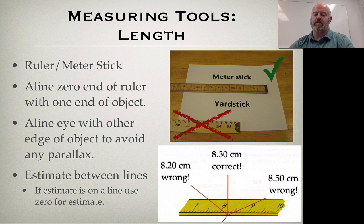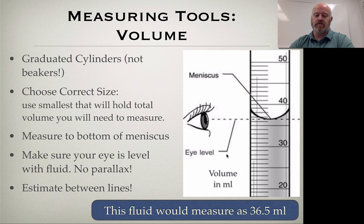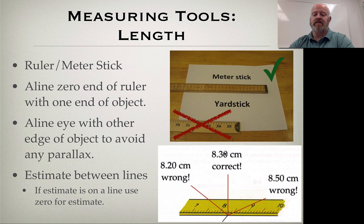Make sure you're estimating between the lines. So on this measurement, we notice how this line, I believe it hit exactly at 8.3. I think it hits right on that line. So my estimate here is 8.30. I'm estimating the zero in this scenario. The tool tells me 8.3. I estimate the zero in this case.